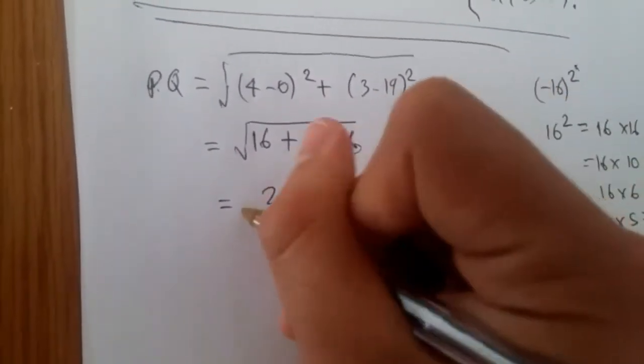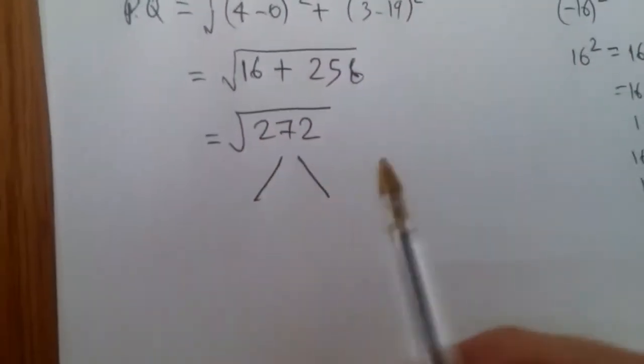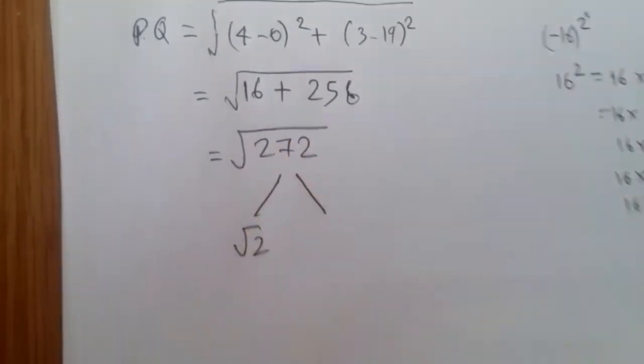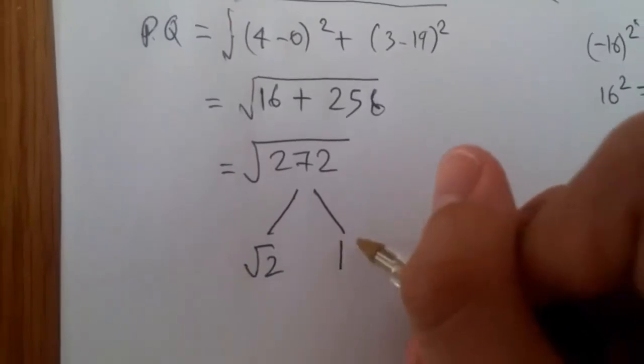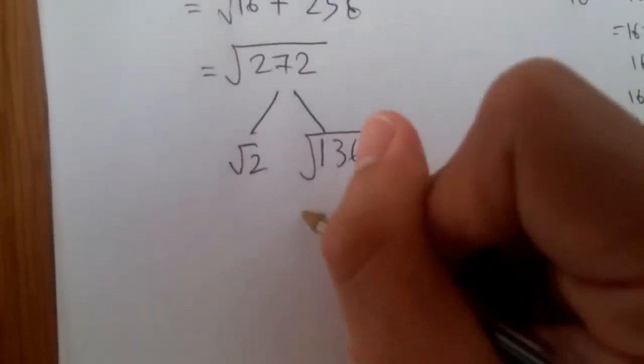It should be 272. Yeah, so again, mental maths. Let's break this into half. So halving this number, always work hard. So root 2, and this should give us 1, half of 72 is 36, root 1, 3, 6.